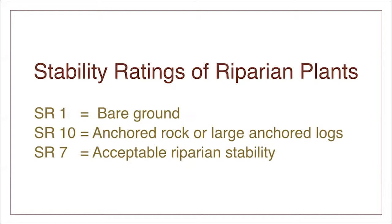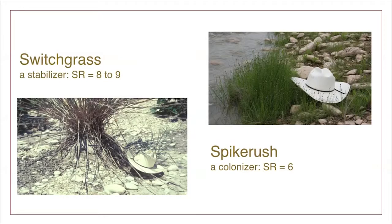In the hill country of Texas, a riparian plant community with an average stability rating of 7 is sufficient to maintain functional conditions. In south Texas, on low-gradient streams, an average rating of 6 is acceptable. Switchgrass has a stability rating of 8 to 9. Spike Rush, a colonizer, has a rating of 6.